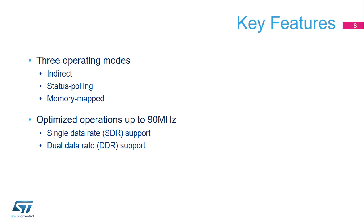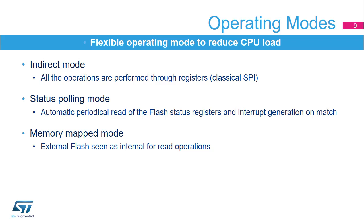Communication with external memories supports single or dual data rate operation. The Octo SPI supports three different modes of operation: indirect mode, where it behaves as a classical SPI interface and all operations are performed through registers; status polling mode, where the flash status registers are read periodically with interrupt generation; and memory mapped mode, where external memory is seen as if it is internal memory for read operations.